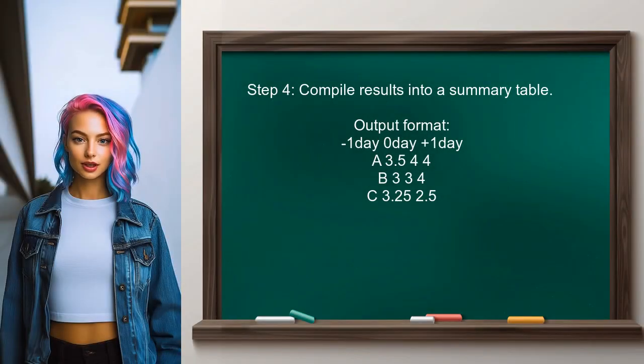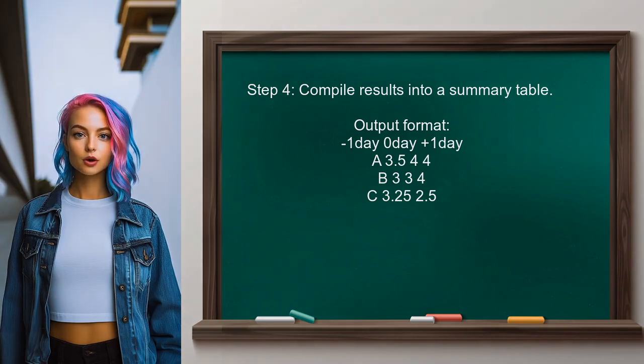Finally, the user should compile the results into a summary table that includes the mean scores for Minus1Day, ZeroDay, and Plus1Day for each ID. This will provide a clear overview of the data.